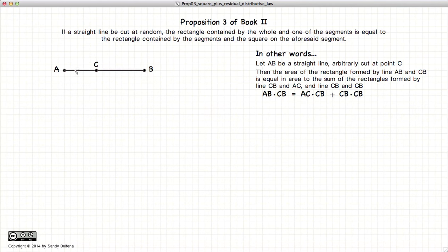if you have a line segment which I will call A, and is cut into two arbitrary lengths denoted by C, so we have a line segment of X and a line segment of Y, then the rectangle formed by A and Y, in other words AY,